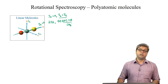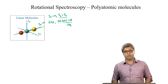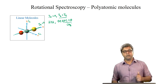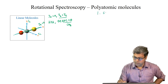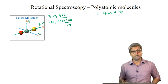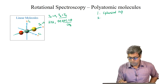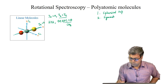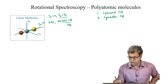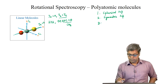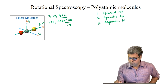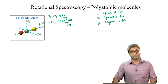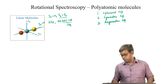In general, any molecule can be classified into three top or rotor categories: spherical top (or spherical rotor), symmetric top (or symmetric rotor), and asymmetric top (or asymmetric rotor). We will look into these categories one by one.